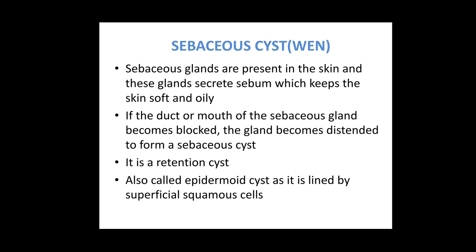A sebaceous cyst is a cyst that develops in a sebaceous gland. It is a retention type of cyst. It forms due to blockage of the duct of the sebaceous gland, so the gland gets distended with secretions, resulting in a cystic swelling. It is also known as an epidermoid cyst because it is lined by superficial squamous cells. It is also commonly known as a wen.